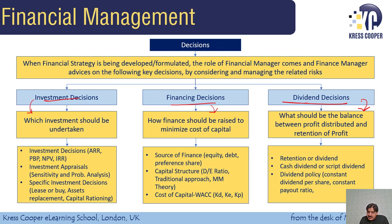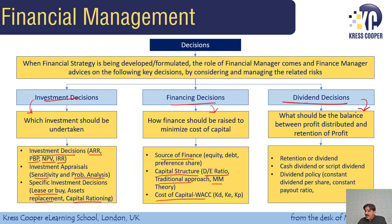Under investment decisions, we will learn accounting rate of return, payback period, net present value, internal rate of return, sensitivity and probability analysis, lease and buy decisions, asset replacement, and capital rationing. Under financing decisions, we will cover sources of finance, capital structure, the DE ratio, approaches including the traditional approach, MM theory, and cost of capital — including how to calculate the cost of capital. Under dividend decisions, we will discuss retentions vs. dividend, cash dividend vs. script dividend, dividend policy, constant payout ratio, and the mode of dividend.